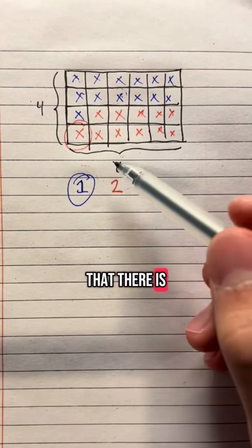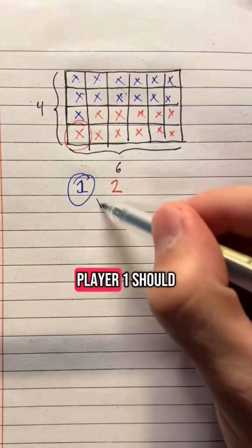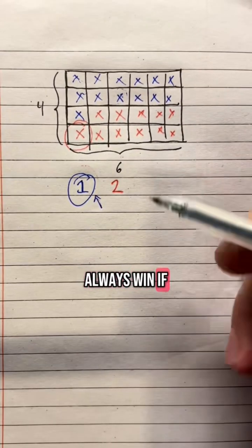It turns out that there is a very clever proof to show that if you have a rectangular grid, player one should always win if they know what they are doing.